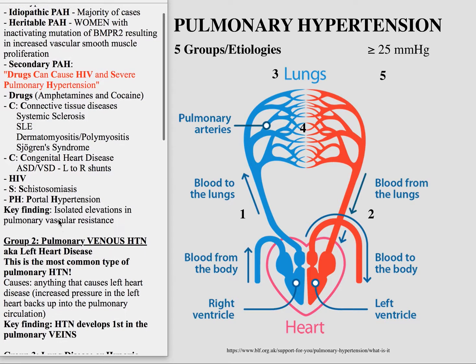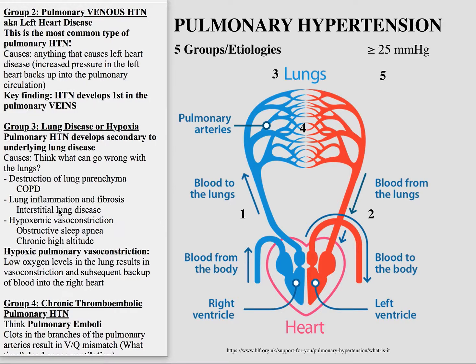Group 2 is pulmonary venous hypertension. The pulmonary veins go into the left heart, so this is all the left heart diseases. One of the sequelae of chronic and severe left heart problems is eventually right heart failure, because the increased pressure within the left heart works its way back, increasing pressure within the pulmonary vasculature. This is the most common type of pulmonary hypertension in general. This is also sometimes referred to as cor pulmonale.